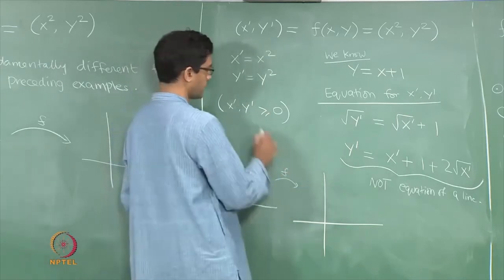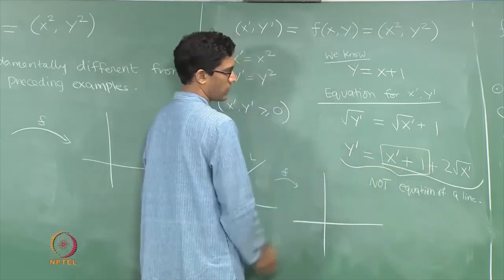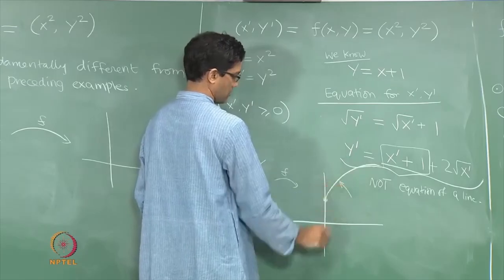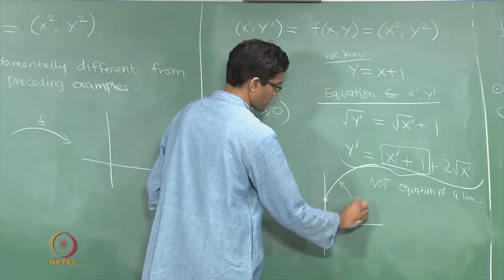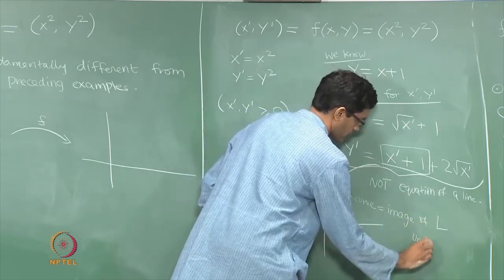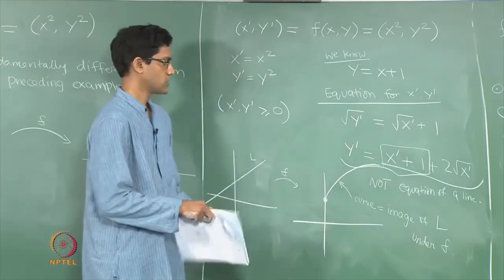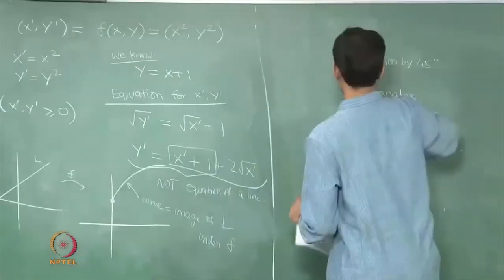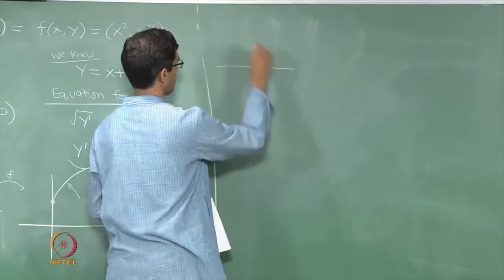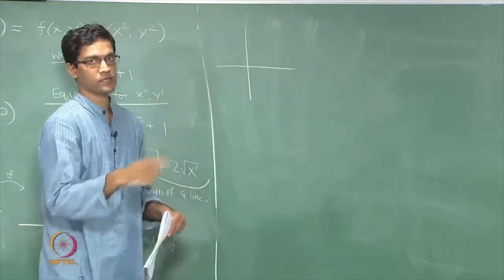The original line y = x + 1, when mapped under f, deforms to a curve — not a line. x′ and y′ are both positive and connected by y′ = x′ + 1 + 2√x′, which is some curve. This is a very fundamental difference from our earlier examples: f does not map lines to lines. This makes analysis harder, because you can no longer figure out what happens to polygonal regions just from their vertices — the edges can deform to strange curves.